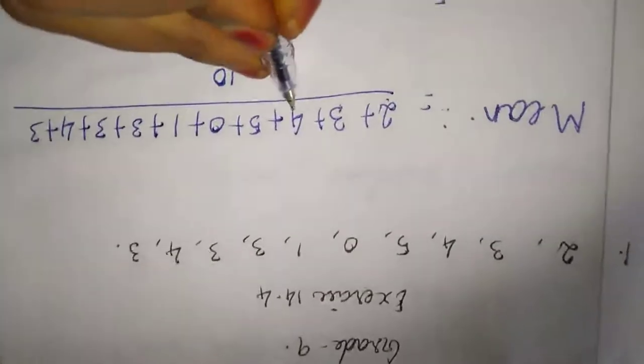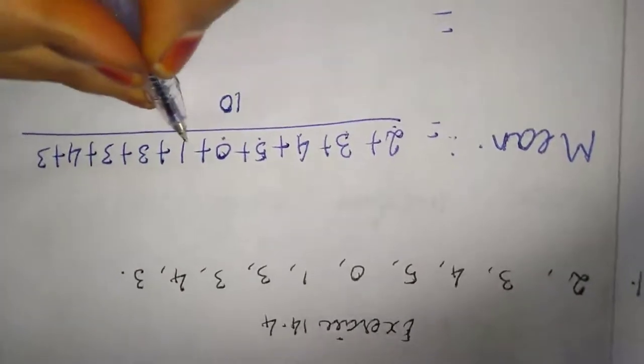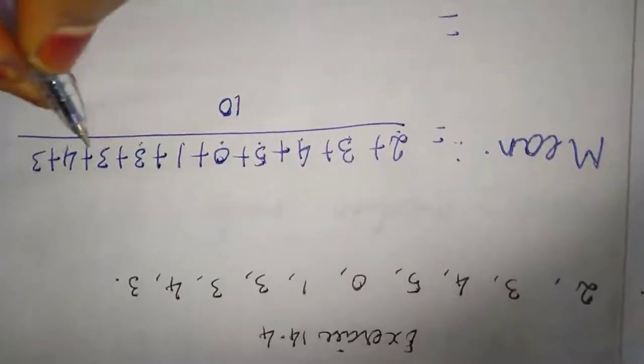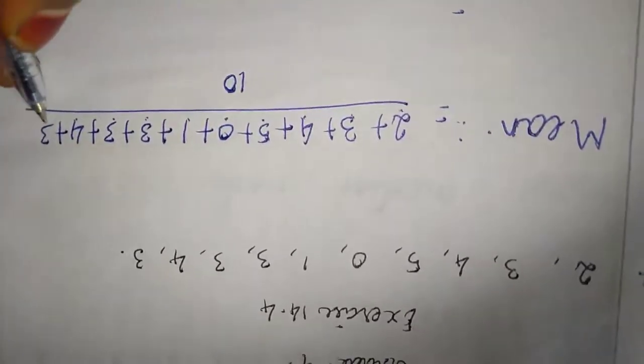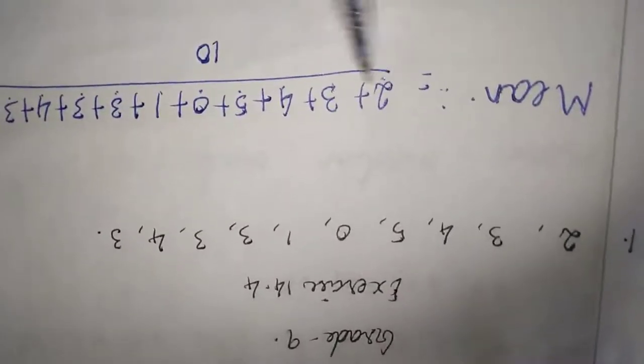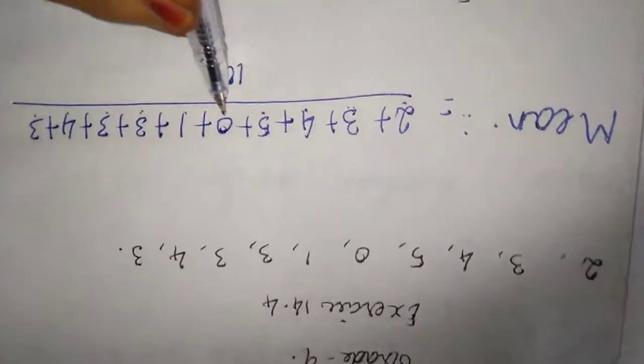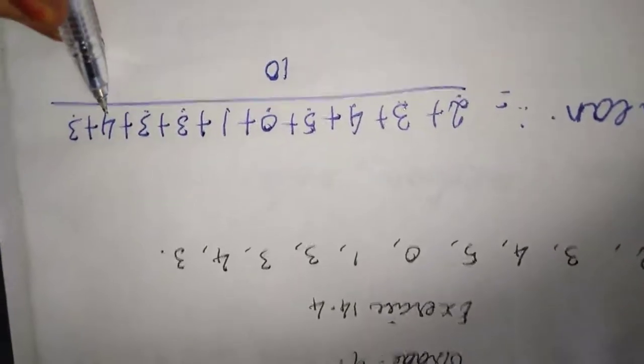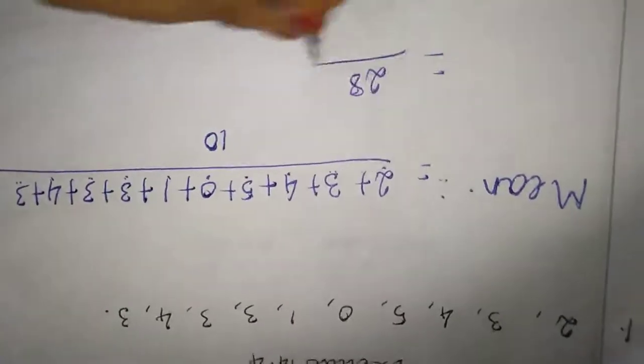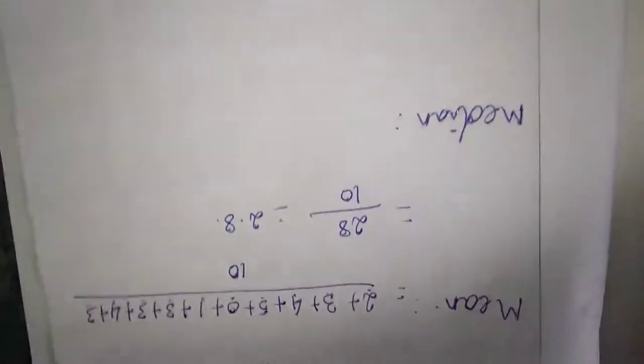I am adding this: 2 plus 3 is 5, 5 plus 4 is 9, 9 plus 5 is 14, 14 plus 0 is 14, 14 plus 1 is 15, 15 plus 3 is 18, 18 plus 3 is 21. Let me recount: 14, 14, 15, 18, 21, 25, 28. So 28 divided by 10. Since the denominator is 10, we keep 1 digit after the decimal. The mean is 2.8.